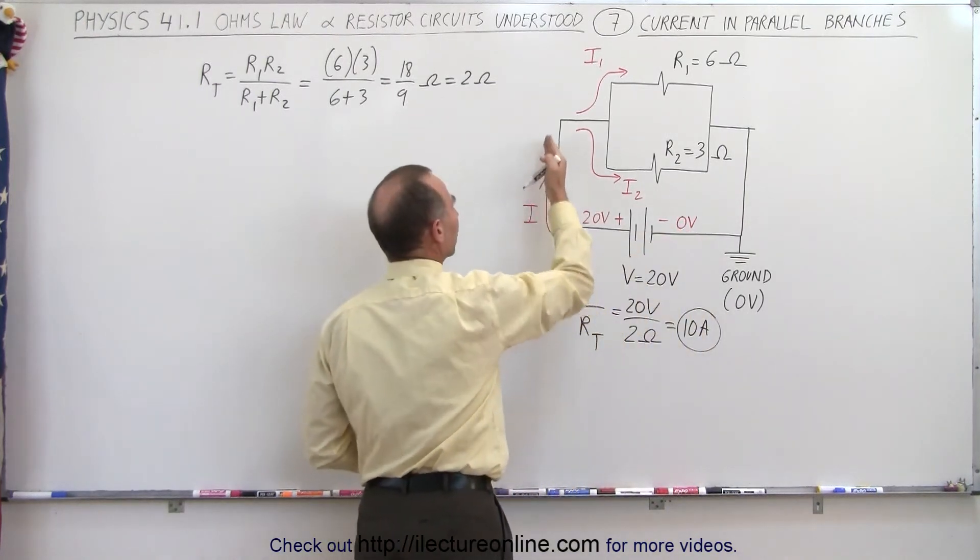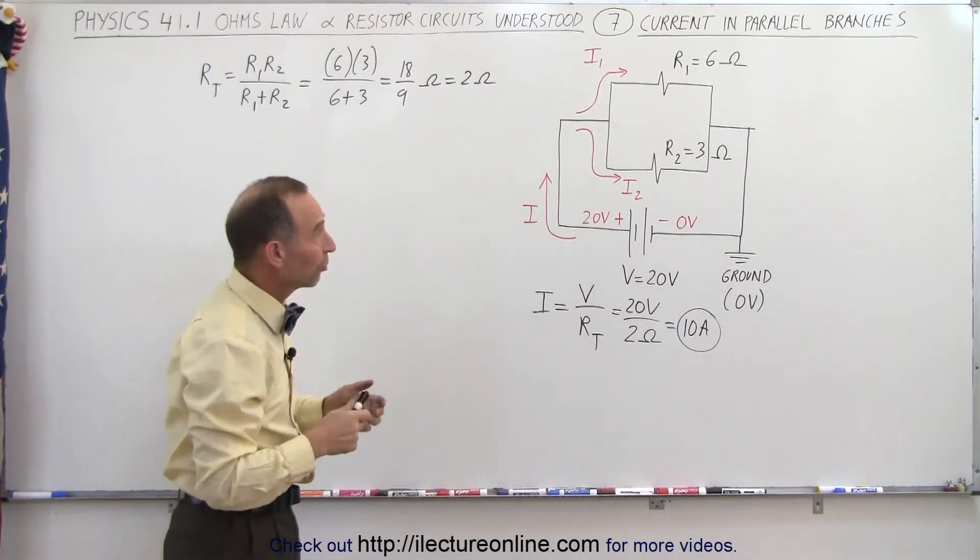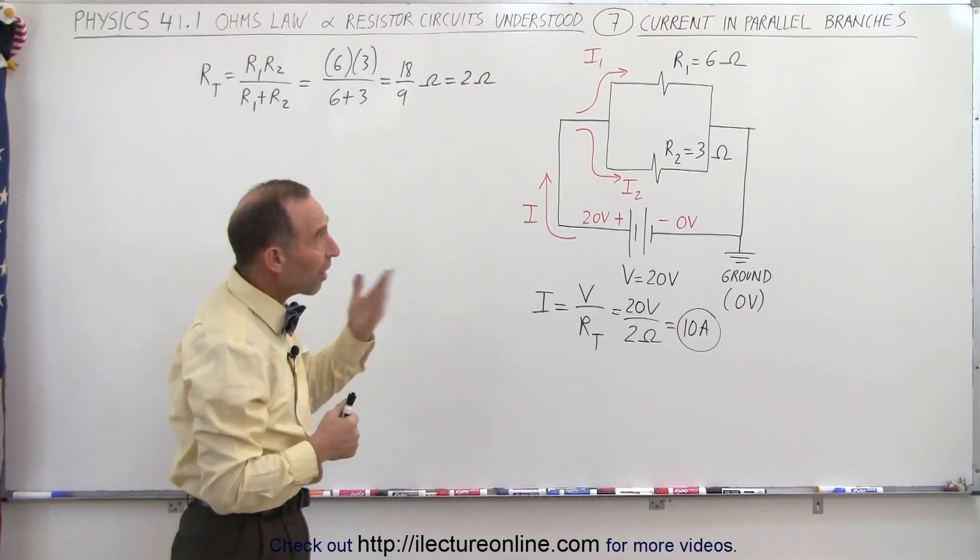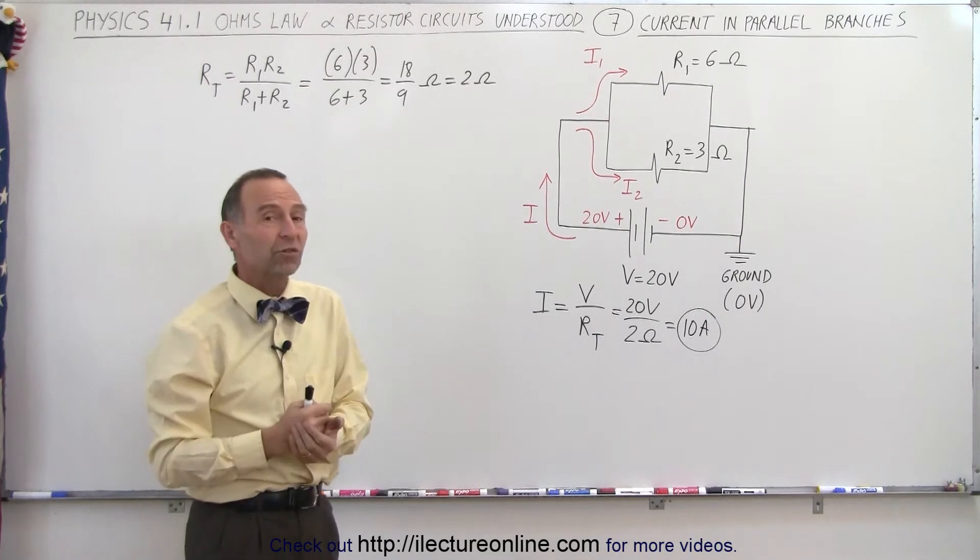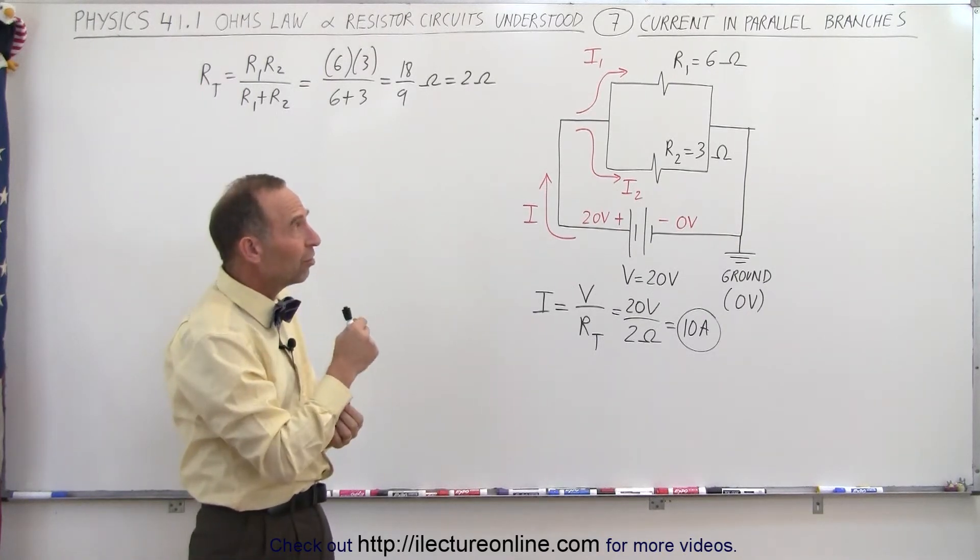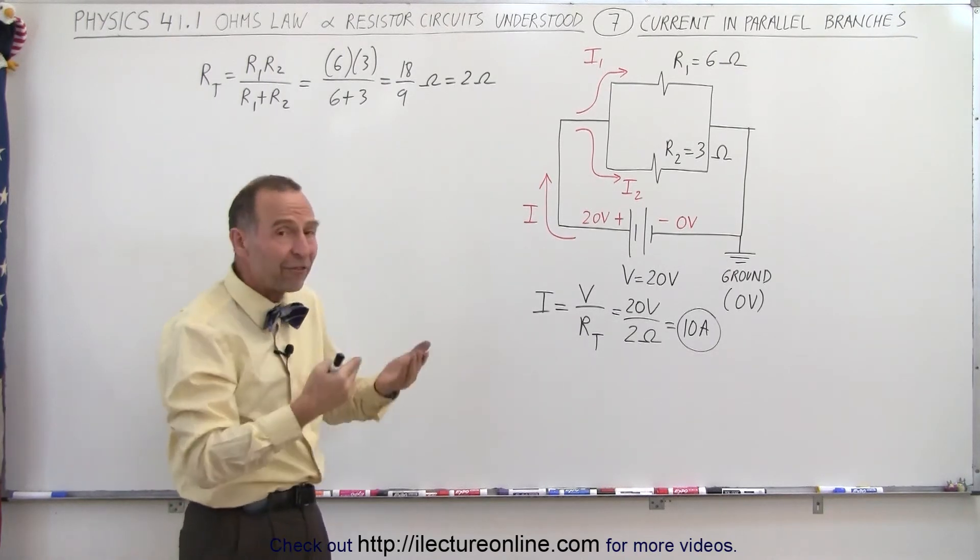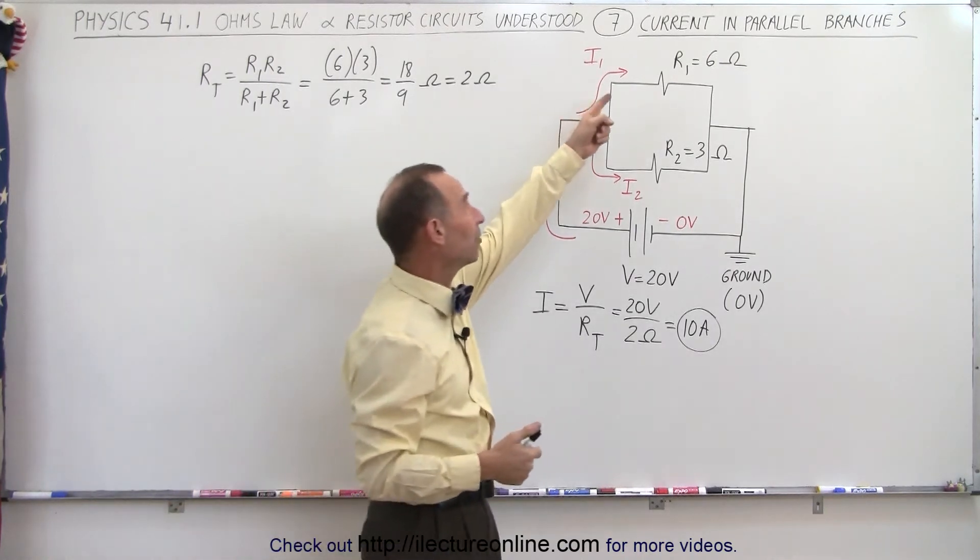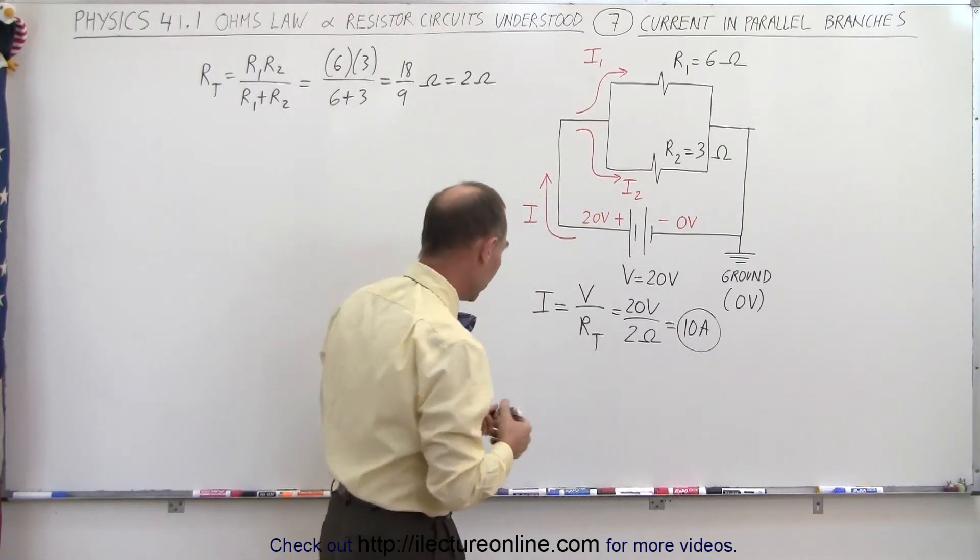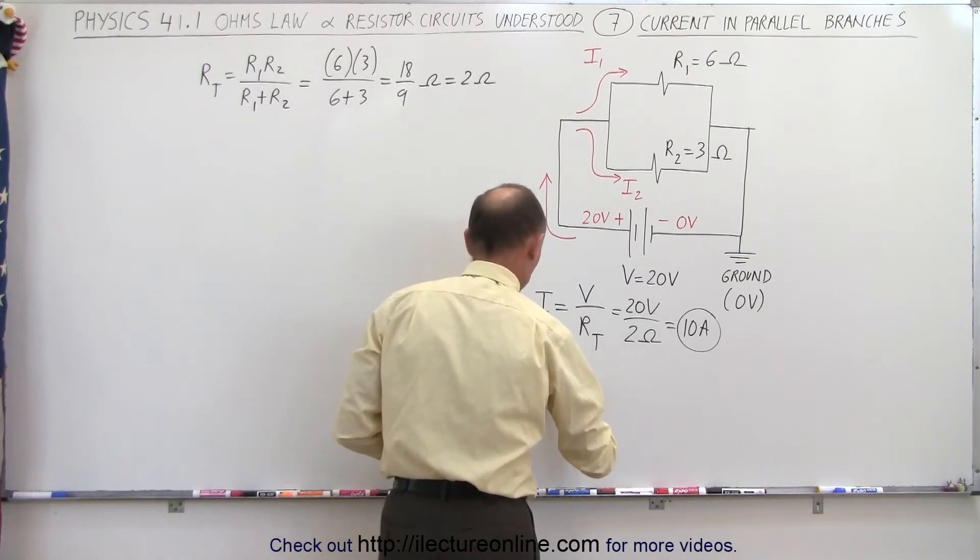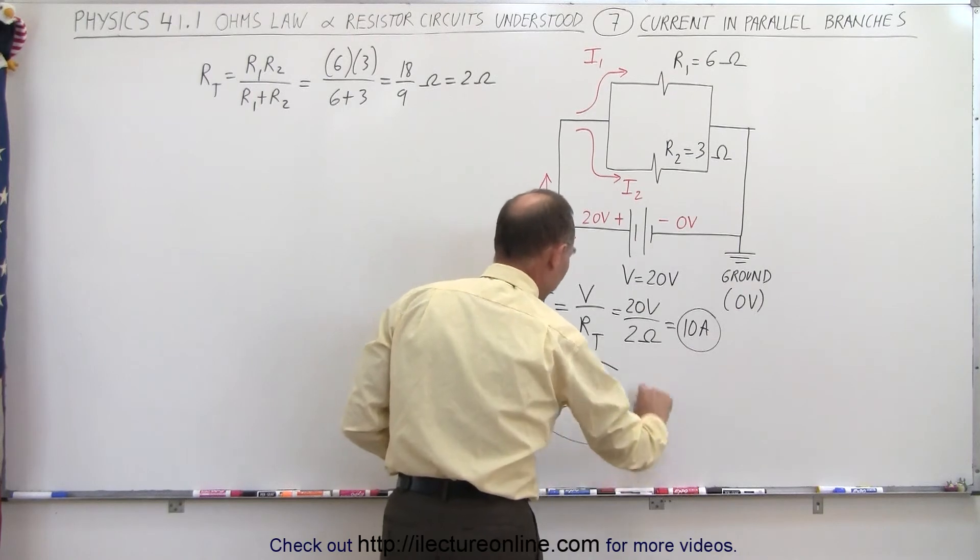So 10 amps of current are flowing through the circuit, and now the current is dividing itself between the two branches. Notice in the top branch there is a 6 ohms resistor, in the bottom branch there is a 3 ohms resistor. Since the 6 ohms resistor is twice as big as the 3 ohms resistor, we expect only half as much current to flow in the top branch, or twice as much current to flow through the bottom branch compared to the top branch. We can say that I2 must be equal to twice I1.